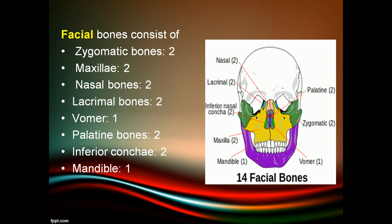The facial bones — 14 in total — are: two zygomatic bones, two maxillae, two nasal bones, two lacrimal bones, one vomer, two palatine bones, two inferior nasal conchae, and one mandible.